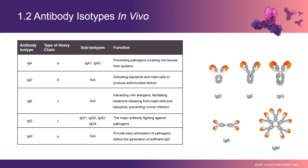IgG constitutes about 80% (12.5 mg/ml) of the antibody in serum. Human IgG consists of four subclasses numbered in order of their serum concentrations: IgG1, IgG2, IgG3, and IgG4. The chief distinguishing characteristic among the four IgG subclasses is the pattern of interchain disulfide linkages in the hinge region. IgM, primarily induced by polysaccharide antigens, is a 950 kDa pentamer that makes up about 8% (1.25 mg/ml) of the antibody in the serum. IgM acts as one of the main receptors on the surface of mature B cells, along with IgD.